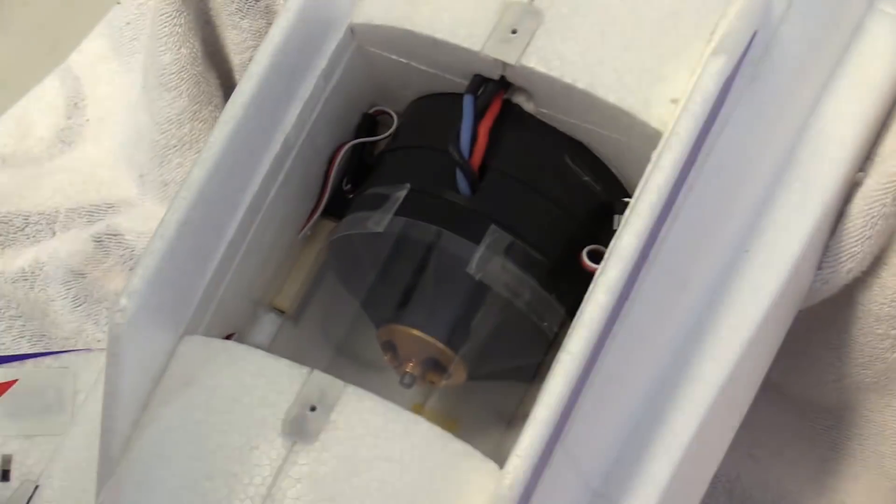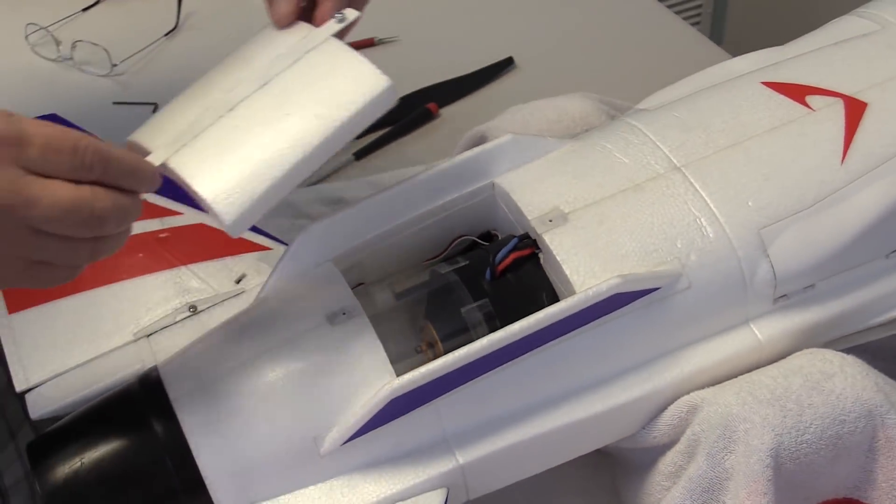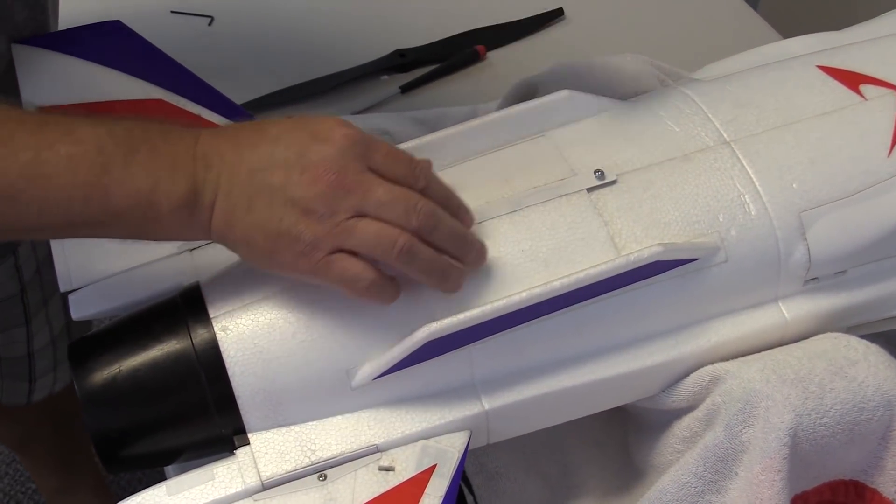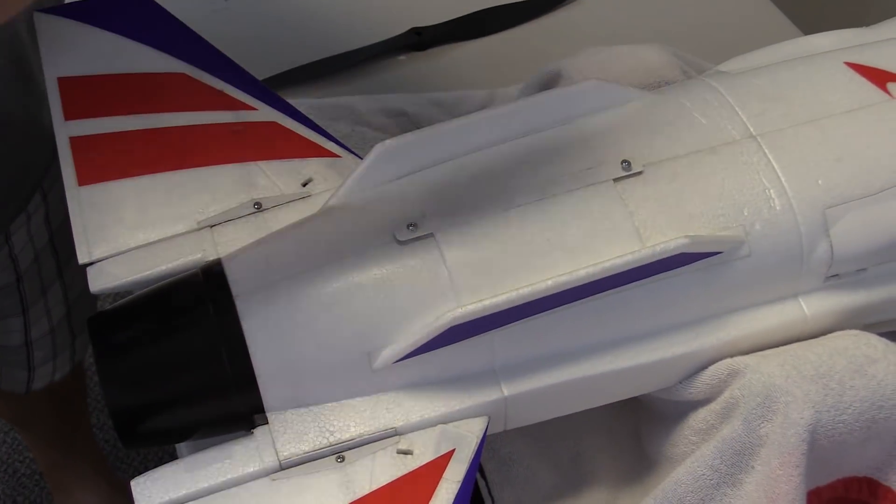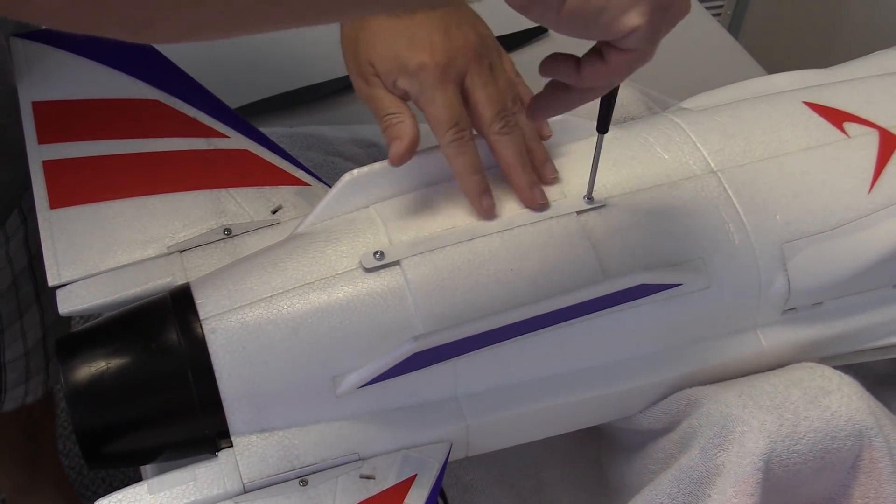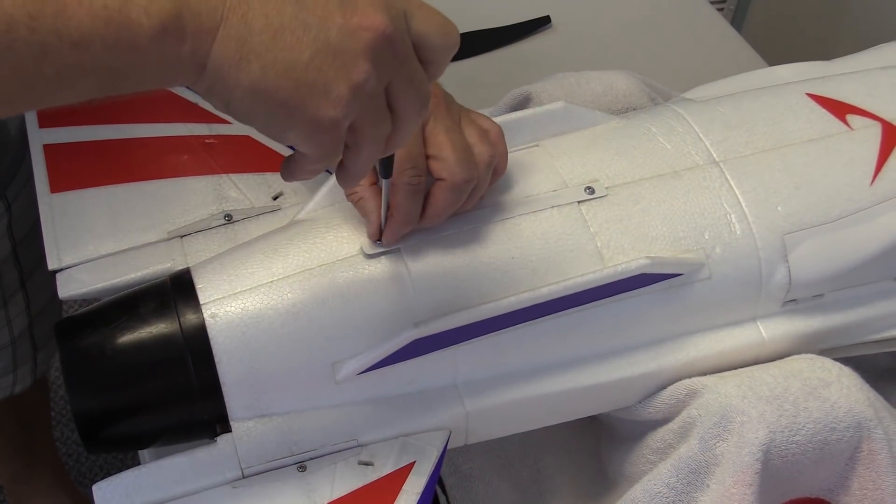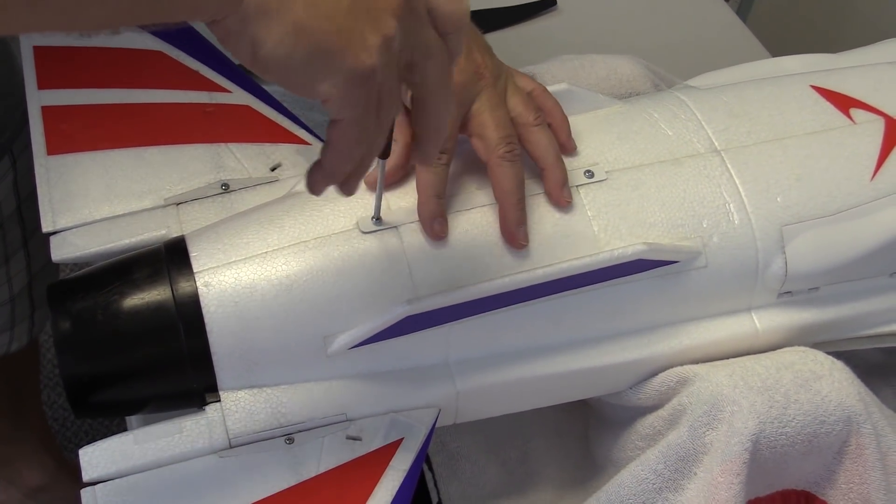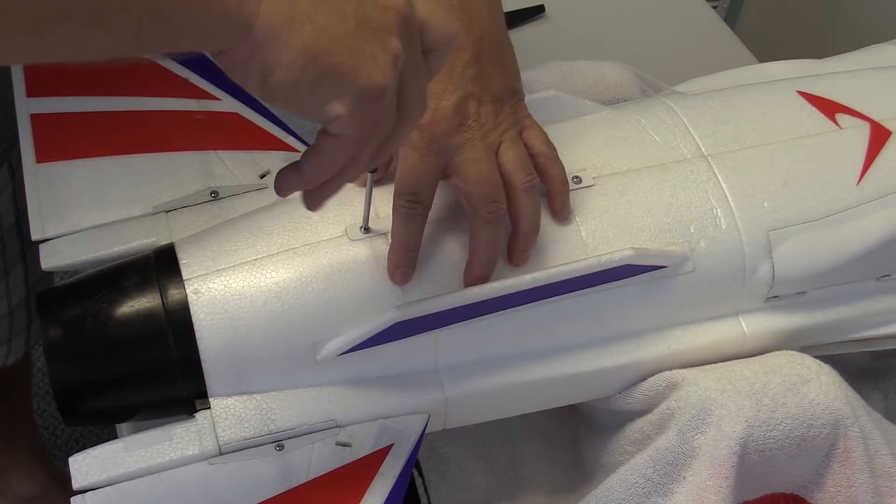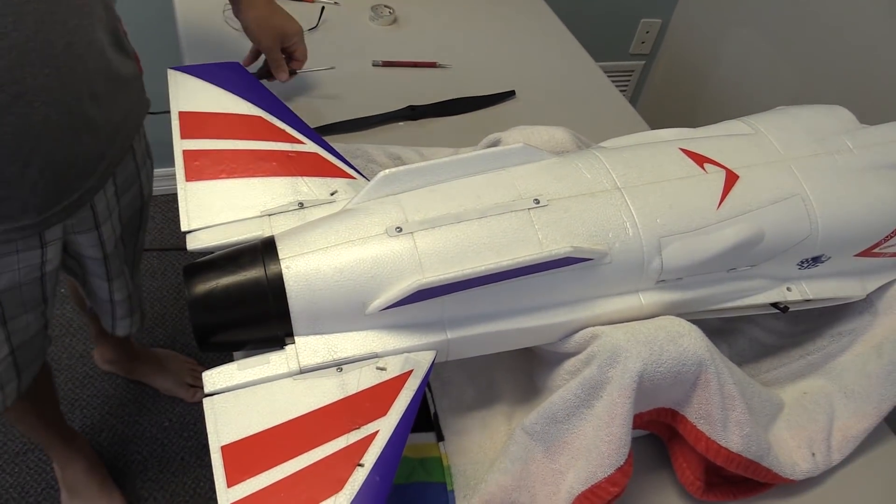And then we're simply going to reinstall the hatch that we removed earlier. It fits one direction, you can tell pretty easily which way it goes, and just run the screws down until they're snug. Now the assembly of the tail of the model is complete.